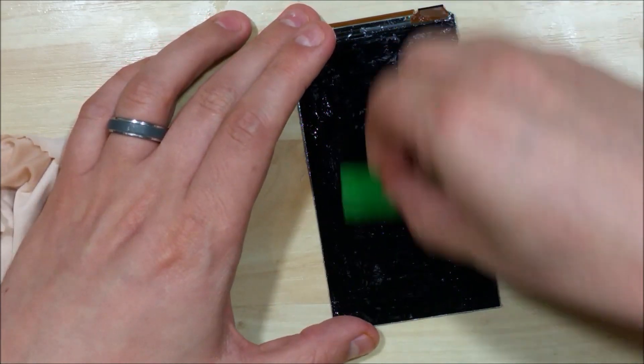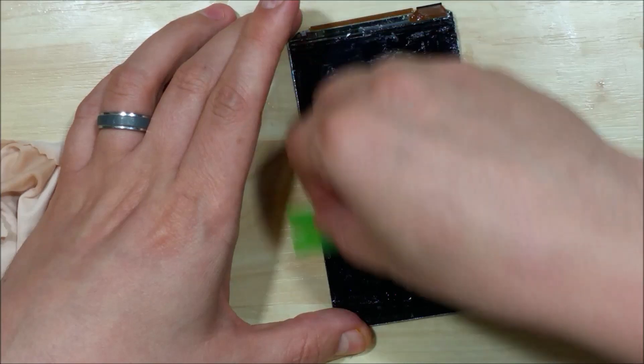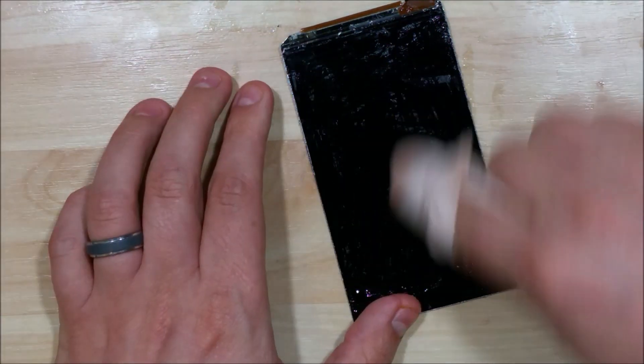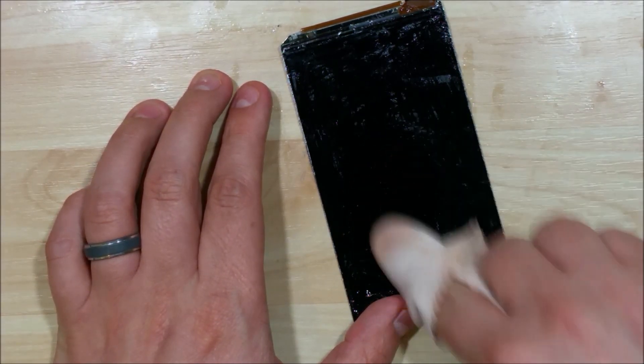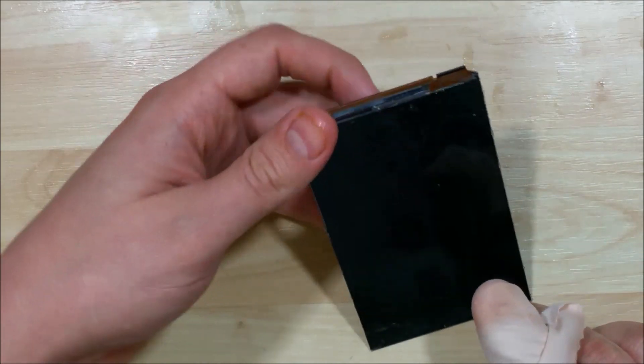Alright so it looks like that worked the best. Try to get as much of the large portion off before you do this. And then use a nice flat surface tool like this plastic razor blade. And then just do a little bit of scrubbing here and you'll get your display nice and clean.